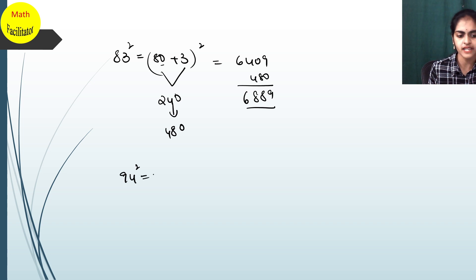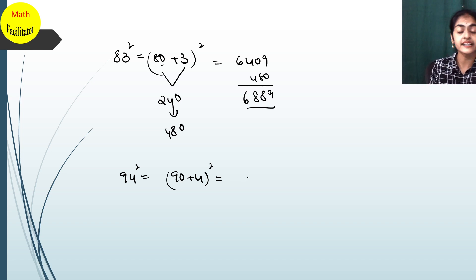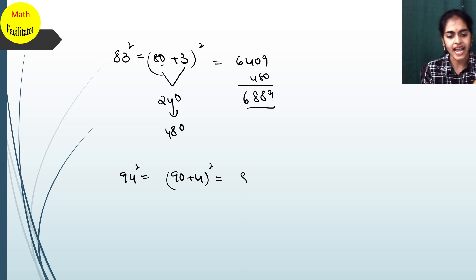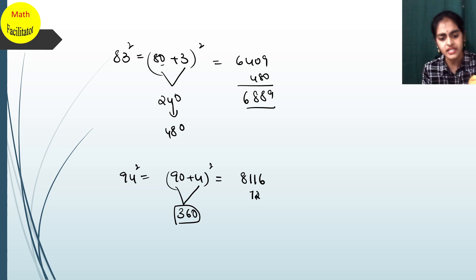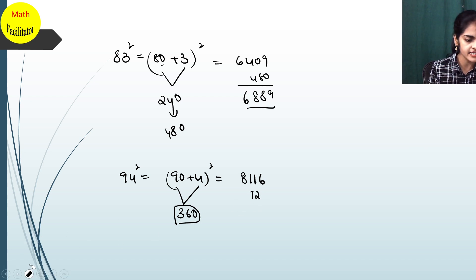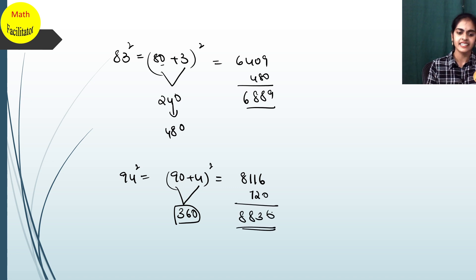One more number: 94². It is (90 + 4)². 90² = 8100, 4² = 16, so 8100 + 16 = 8116. Now 90 × 4 = 360, and 360 × 2 = 720. So 8116 + 720 = 8836.